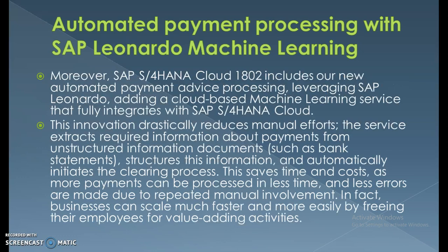For automated mail processing within SAP Leonardo machine learning, SAP S4 HANA Cloud 1802 includes a new automated payment advice processing, leveraging SAP Leonardo and adding a cloud-based machine learning service that fully integrates with SAP S4 HANA Cloud. SAP Leonardo is the IoT — Internet of Things — solution, through which we connect our SAP system with various devices and objects.